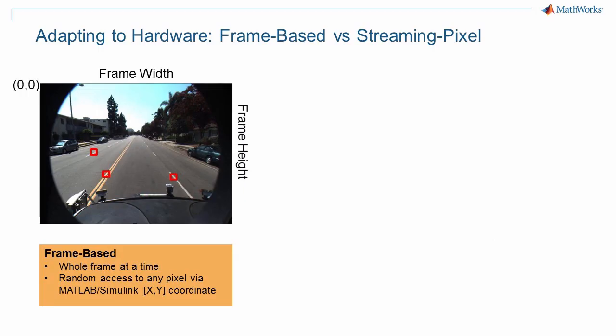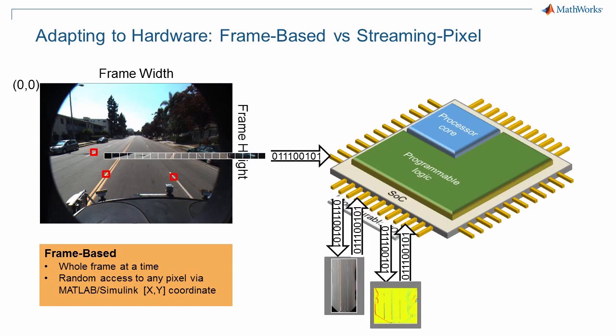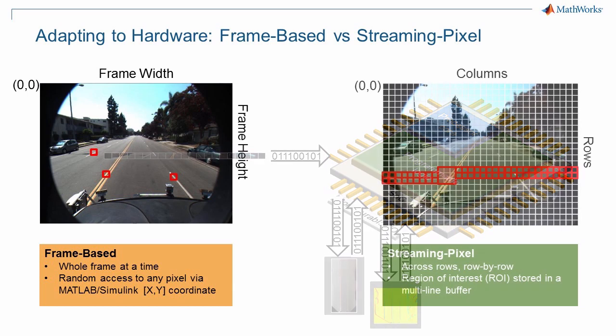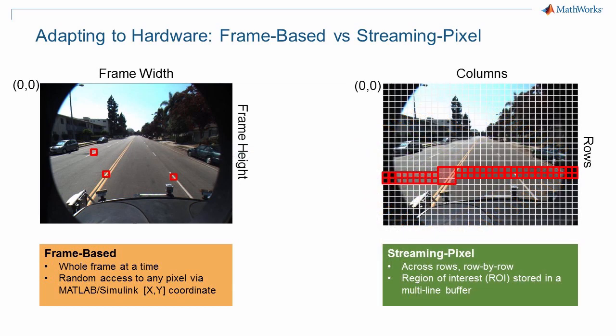With a rough understanding of the constraints of hardware, let's focus specifically on vision processing. At the algorithm level, you can process a frame at a time and access any pixel randomly as an XY coordinate. To do this in hardware would require streaming in a frame, storing it to RAM, reading out what's needed, and storing the resulting frame in another RAM location for every stage of the algorithm. This is slow and resource intensive. It's much more efficient to operate on a continuous stream of pixels, but that can require algorithm changes.